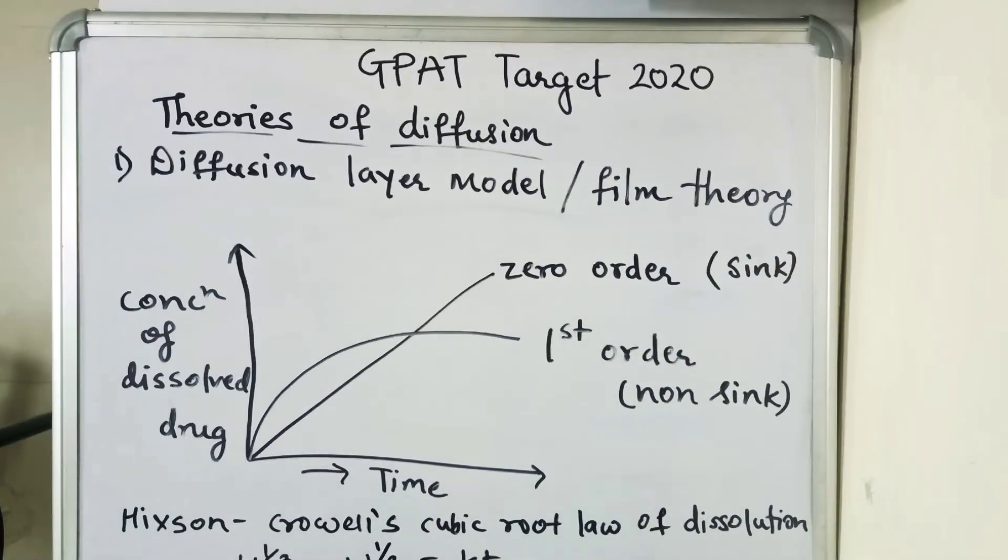Now we will see a plot of concentration of dissolved drug versus time. When solid drug particle is dissolved in sufficient quantity of bulk, then the drug follows first-order dissolution rate, which is under non-sink condition and is generally observed in in-vitro conditions.